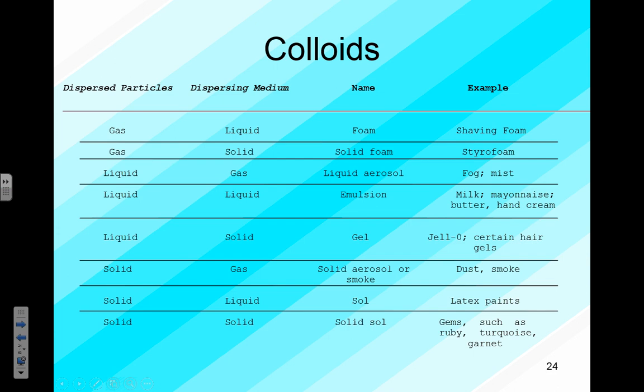Colloidal substances are important in everyday life because we don't want to have to stir up our milk or medicines. Sometimes there are suspensions and we have to — any medicine that reads 'stir before using' is a suspension. But many products people just don't want to shake up. If we make them colloidal, the dispersing medium's particle motions will keep the dispersed particles evenly mixed, even though they're truly not homogeneous.